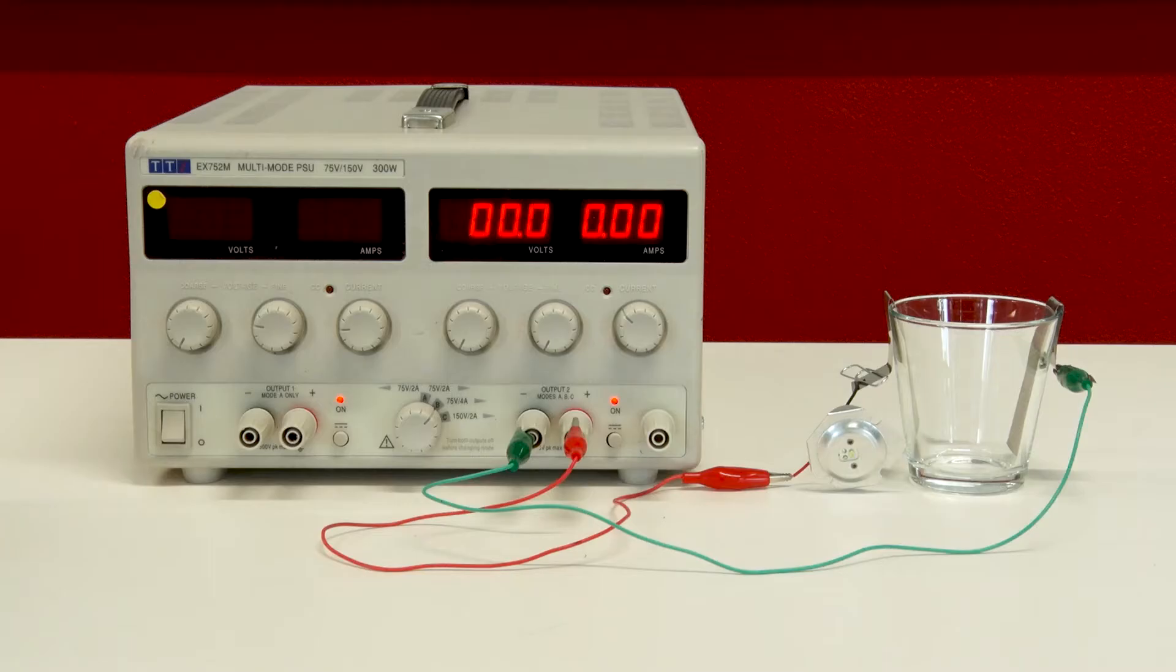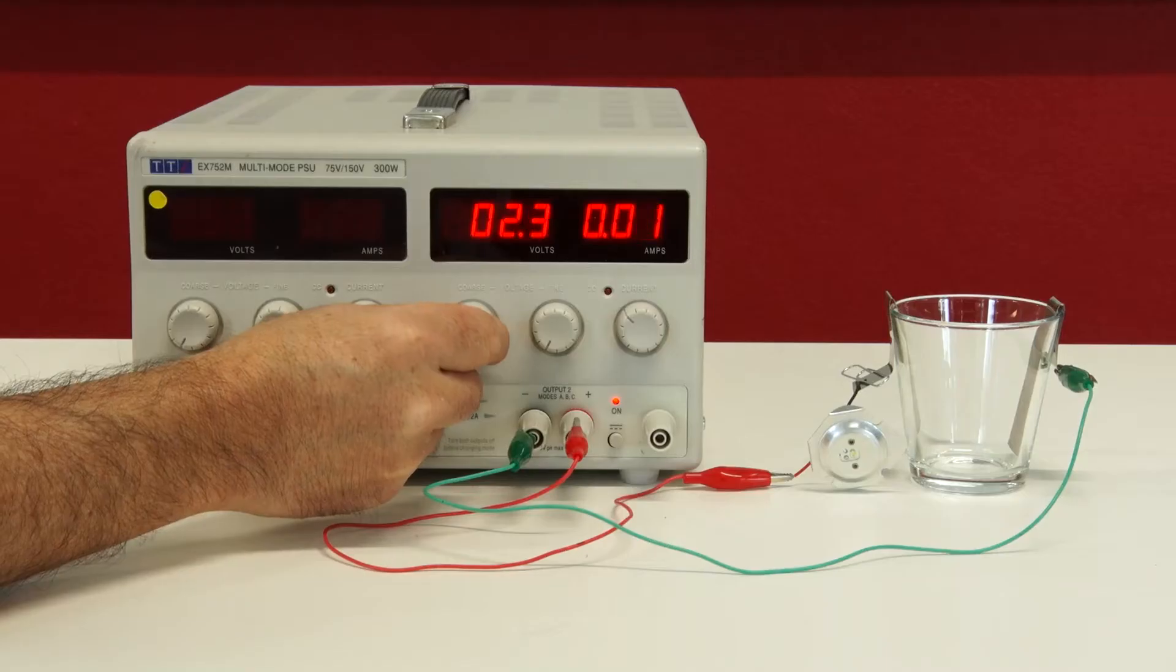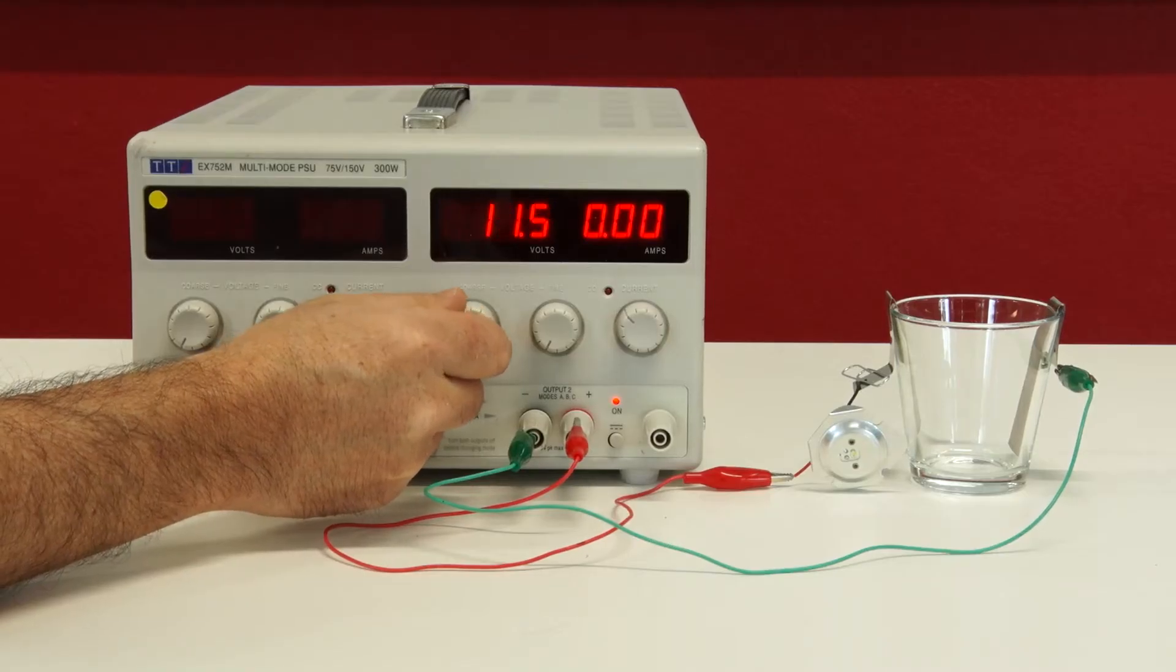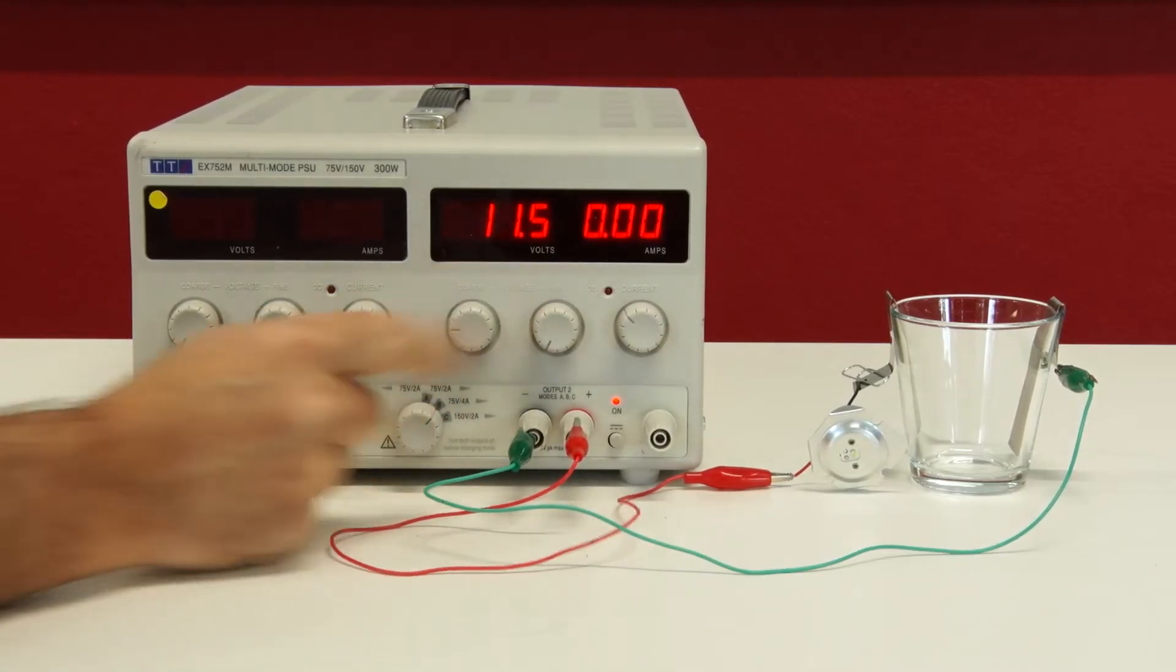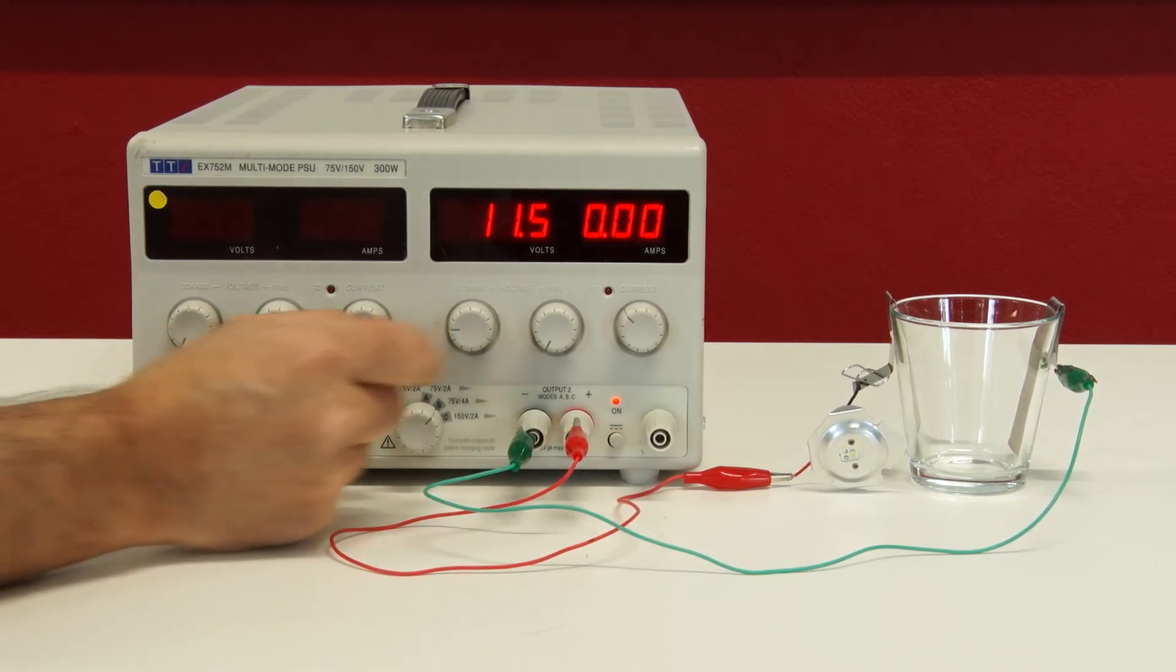Here we have an empty cup. I'm now going to turn up the voltage on these two electrodes. There's no current flowing from the two electrodes. Clearly, air is not a very good conductor.